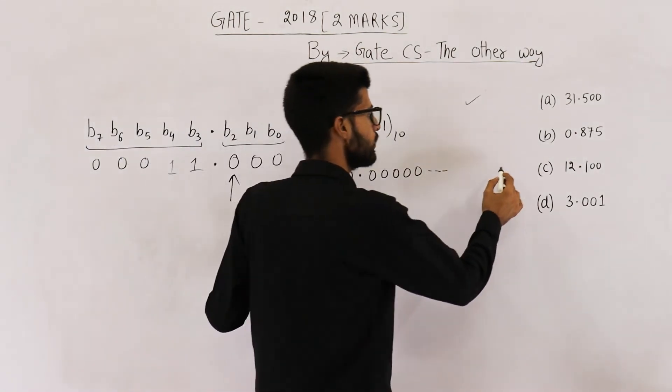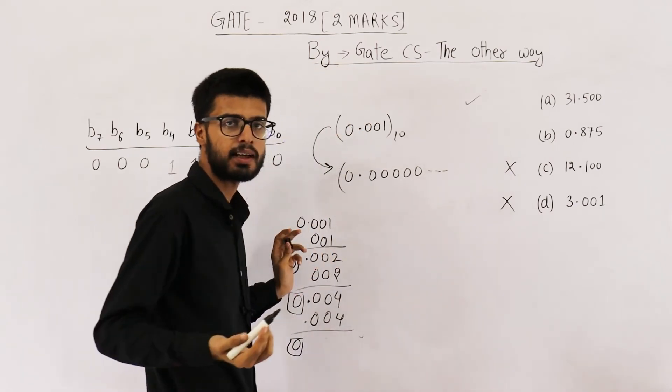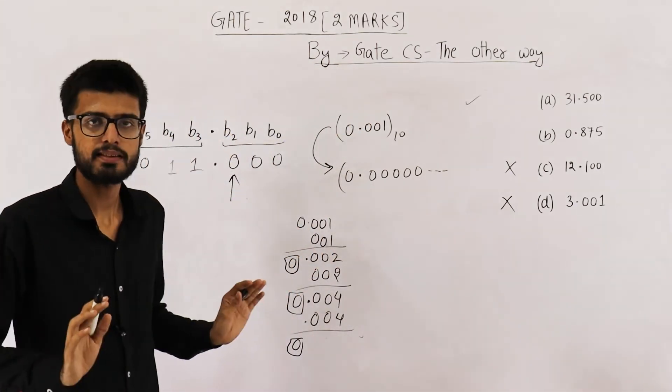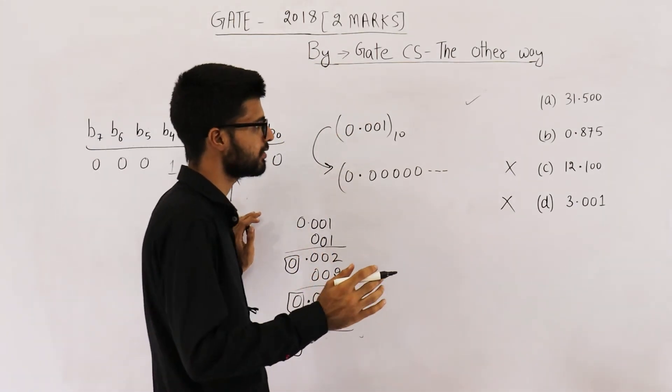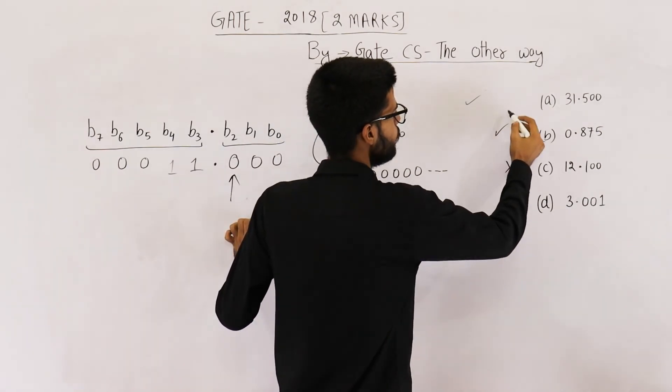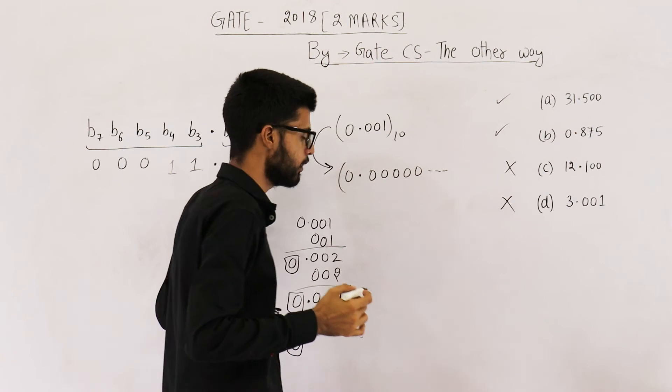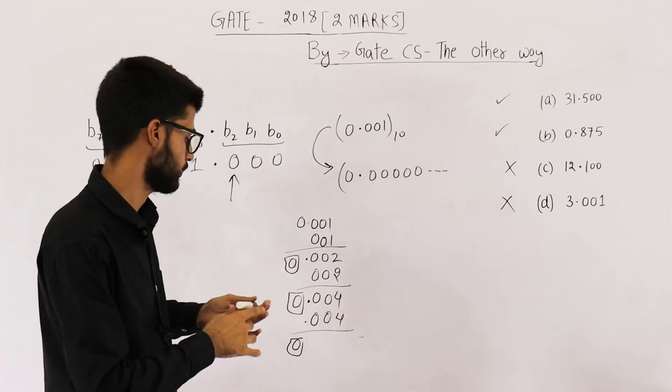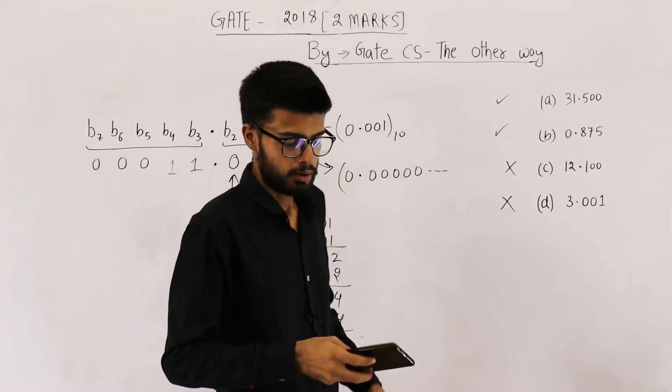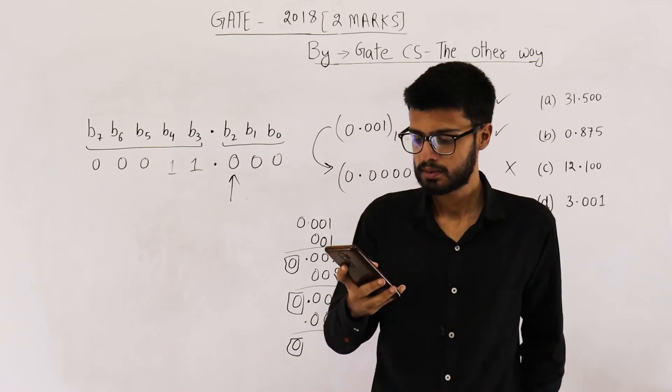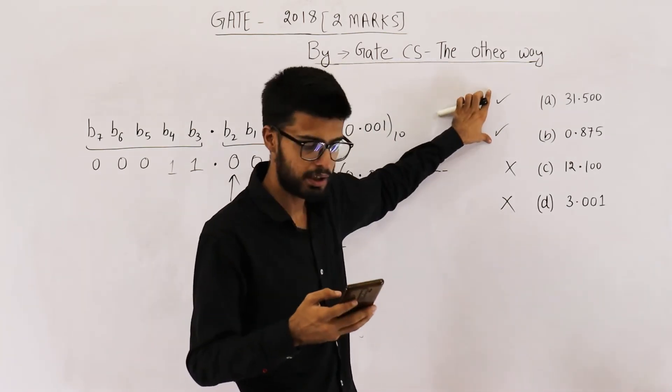12.1 also can't be saved exactly in this representation. We can save this number, but precision will be lost. So both A and B can be saved exactly. So let us see which option is correct.